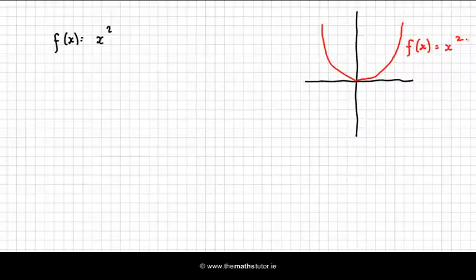Again we have the problem that some of these points down here in the co-domain have nothing mapped onto them. So this one, because we're told that f goes from the reals to the reals, which is all of the reals, so from minus infinity to plus infinity, this is not surjective.